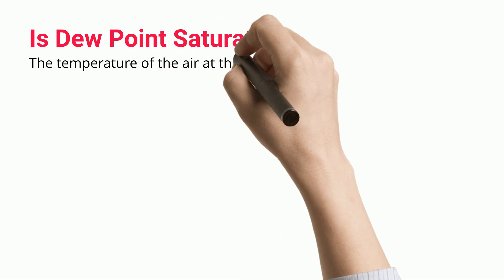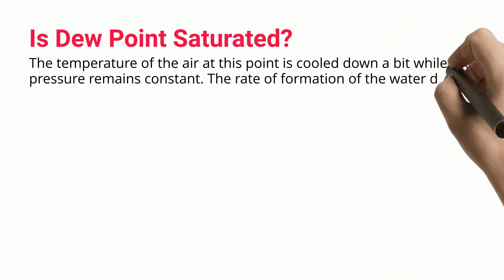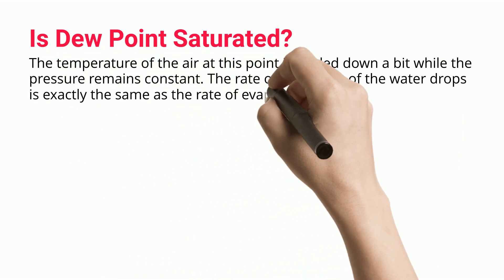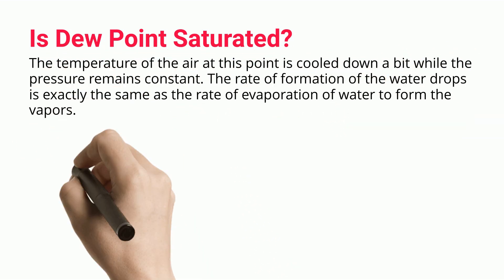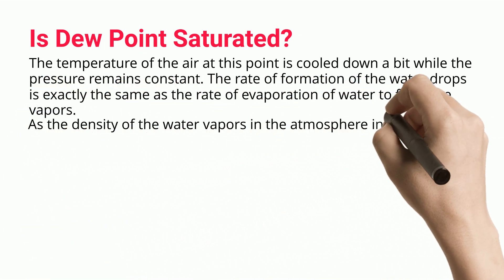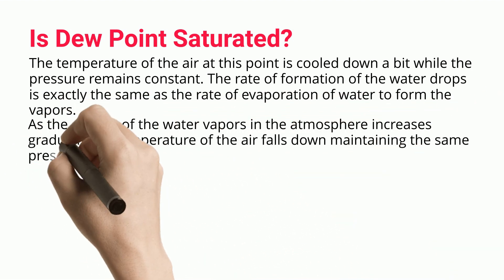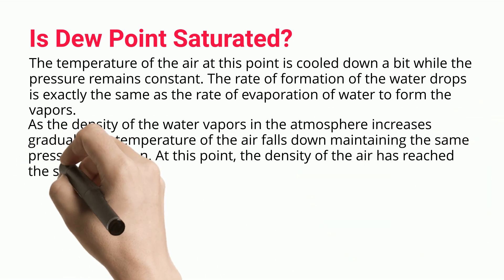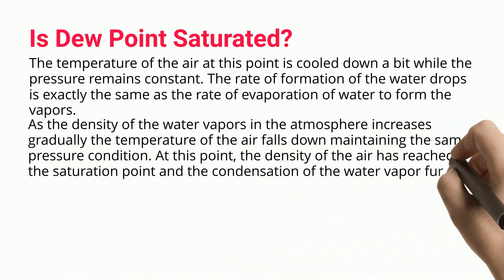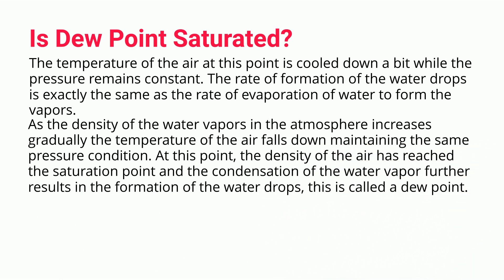At the dew point, the temperature of the air is cooled down a bit while pressure remains constant. The rate of formation of water drops is exactly the same as the rate of evaporation of water to form vapors. As the density of water vapors in the atmosphere increases gradually and temperature falls — maintaining constant pressure — the density of the air reaches the saturation point, and further condensation results in the formation of water drops.